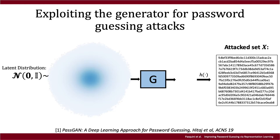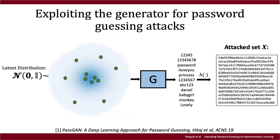To this end, we simply sample latent points from the latent distribution — the Gaussian distribution — and use them as input for the generator, obtaining suitable passwords as output. The generated passwords can then be used as guesses for a password guessing attack. In particular, we mainly consider the case of offline attacks.